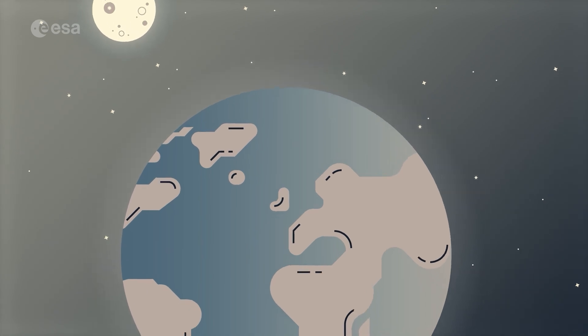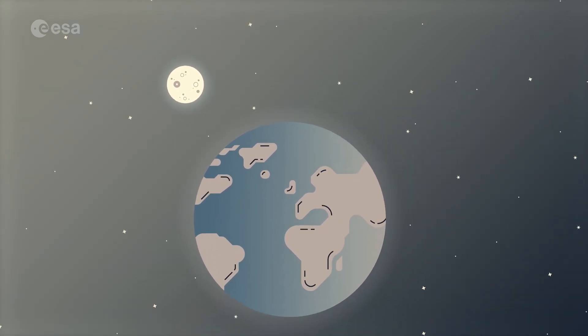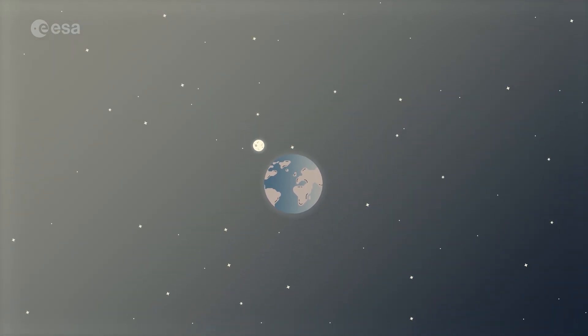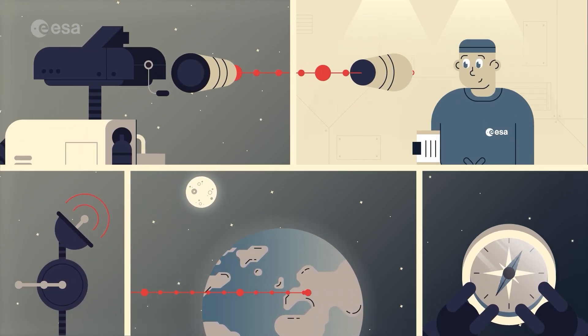As HERA travels further into space, our home planet shrinks to become nothing but a tiny point of light. She needs to orient herself so that her antenna points back at Earth with extreme accuracy.